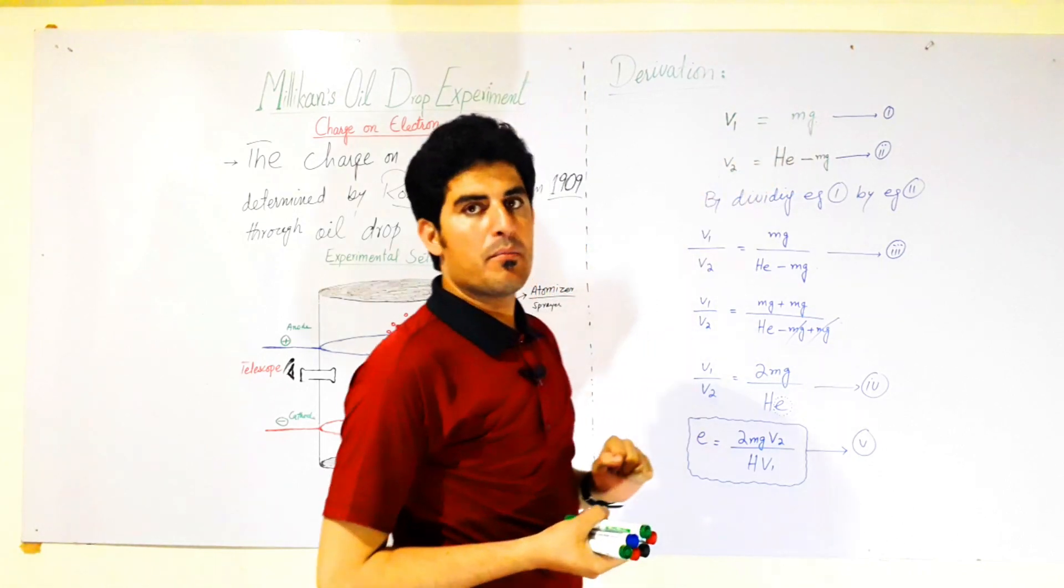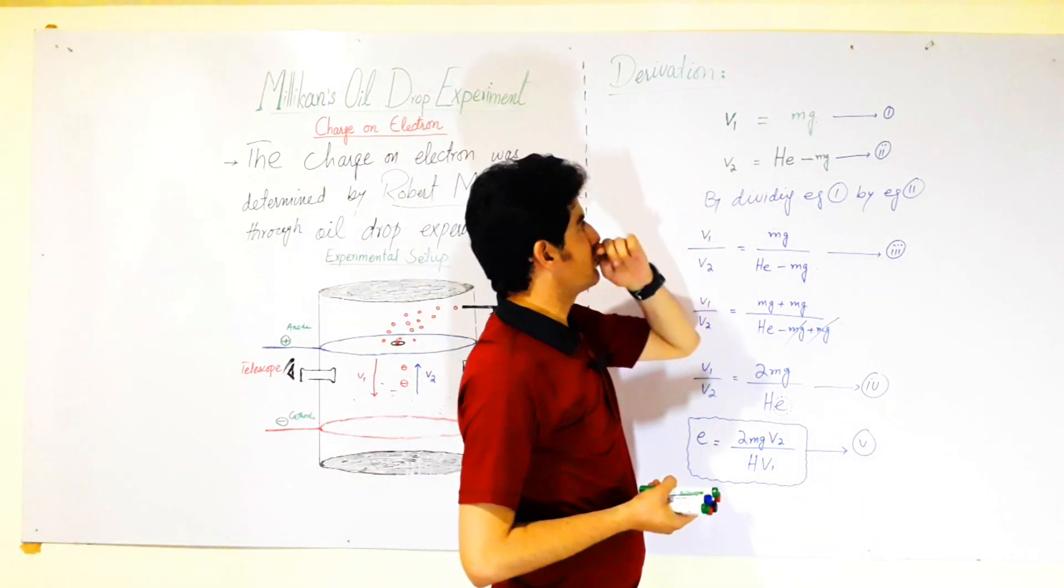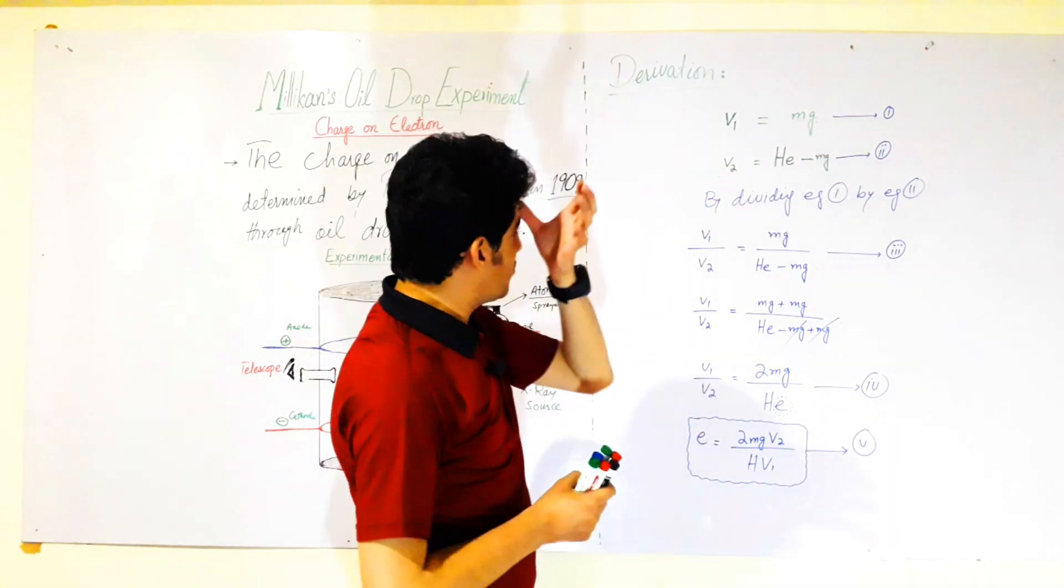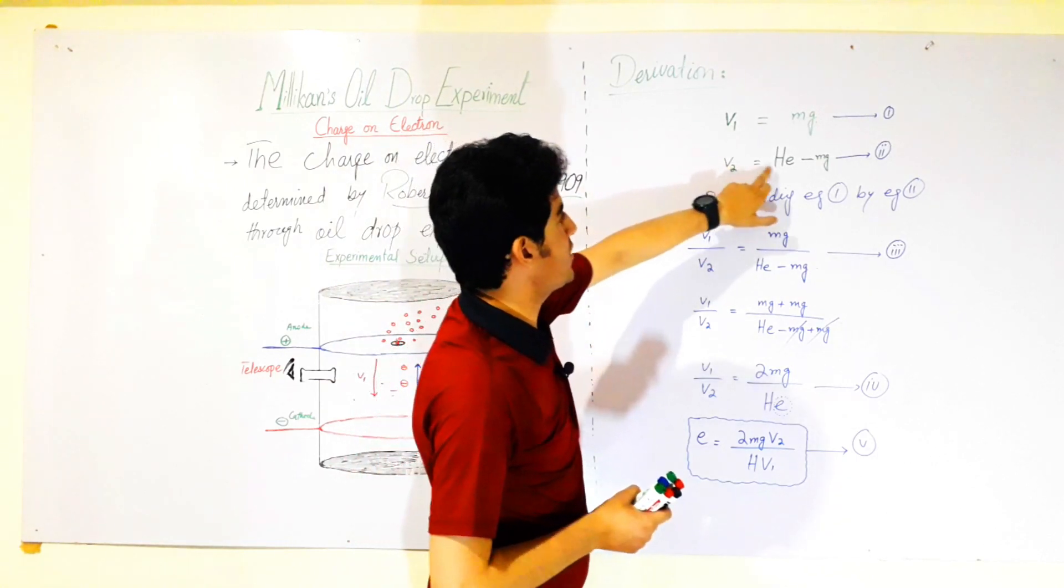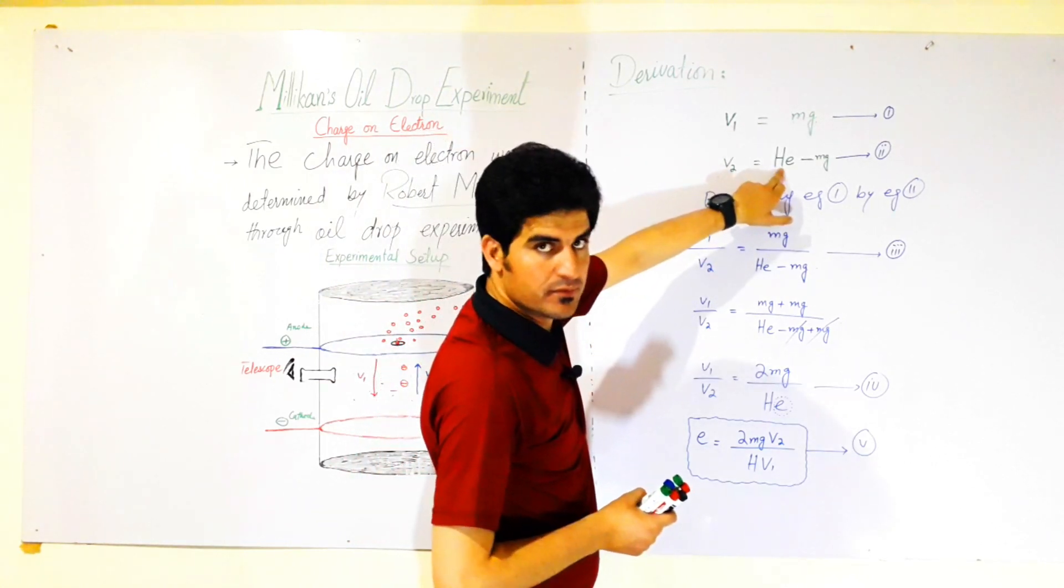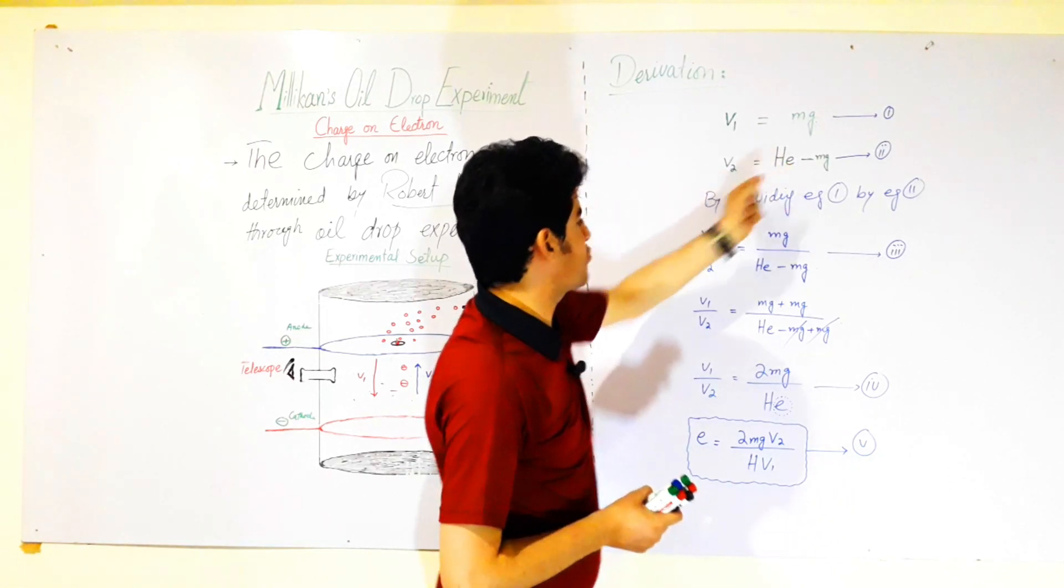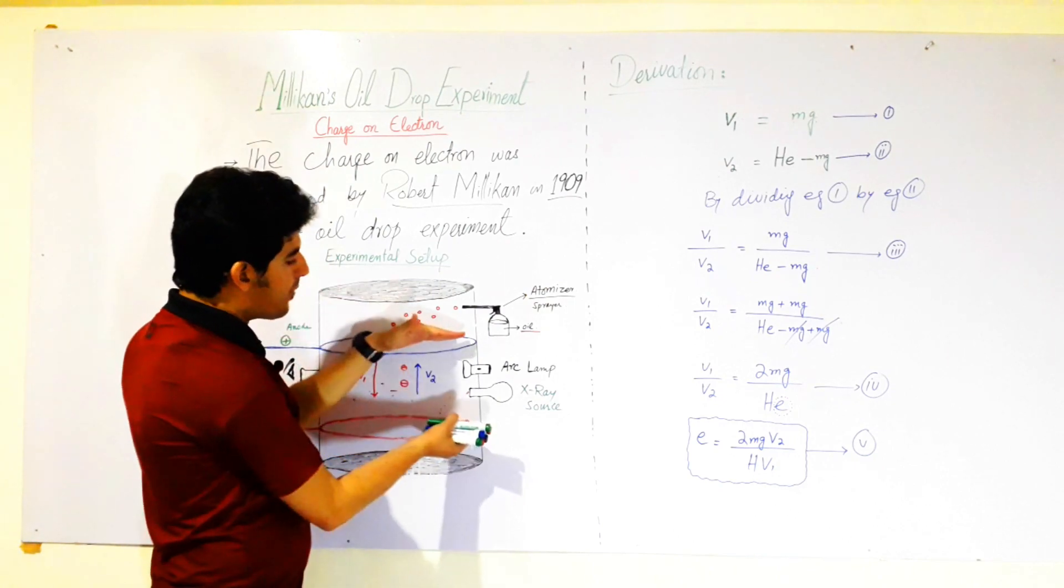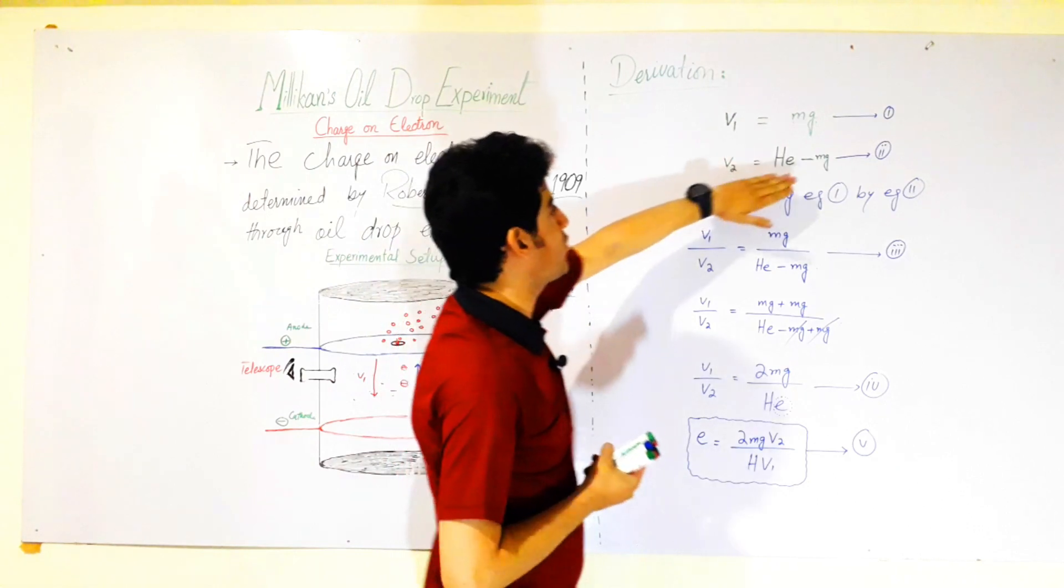It is our equation number one. The second velocity is just because of the electric field, or charge multiplied by the electric field you apply on the droplet. So your second velocity...